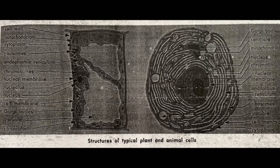This is the picture of the structure of typical plant and animal cells. Let's look at the left one, which is the plant cell. We have several parts: cytoplasm, ribosomes, endoplasmic reticulum, chromosomes, nuclear membrane, nucleus, cell membrane, Golgi bodies, and chloroplasts.